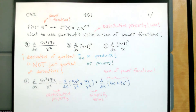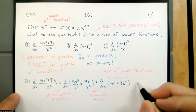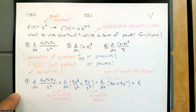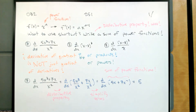Once we have a sum of power functions, shortcut activate. The derivative of 5x to the 1 power is 5 times x to the 0 power, or just 5. The derivative of 7x to the negative 1 is negative 7x to the negative 2. Multiply by the exponent, subtract 1 from the exponent.